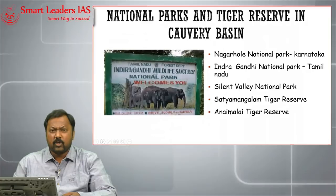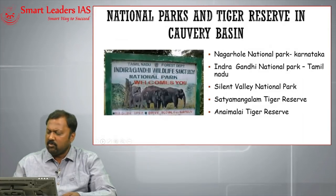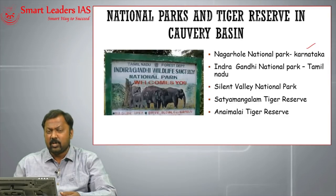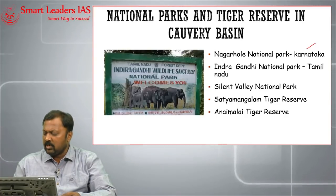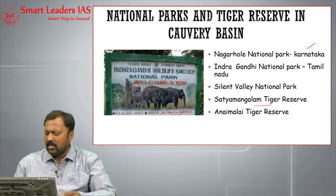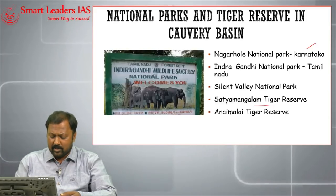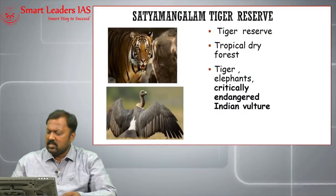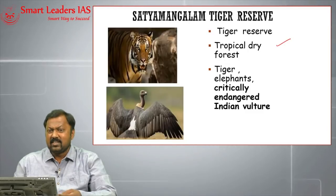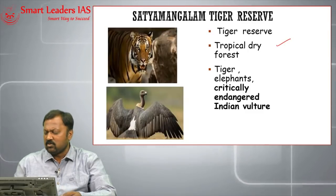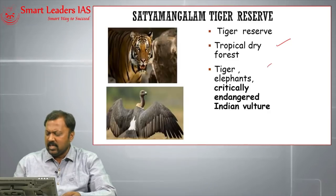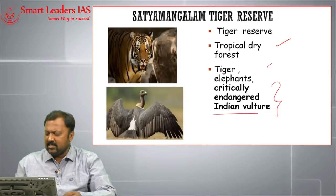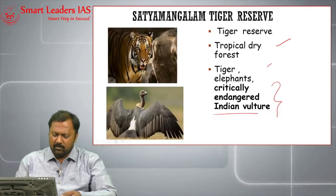National parks and tiger reserves in the Kaveri basin include: Nagarhole National Park in Karnataka, Indira Gandhi National Park in Tamil Nadu, Silent Valley National Park on the Kerala-Tamil Nadu border, Satyamangalam Tiger Reserve in Tamil Nadu, and Anamalai Tiger Reserve in Tamil Nadu. The Satyamangalam Tiger Reserve is located in tropical dry forest and is known for tigers, elephants, and the critically endangered Indian vulture.